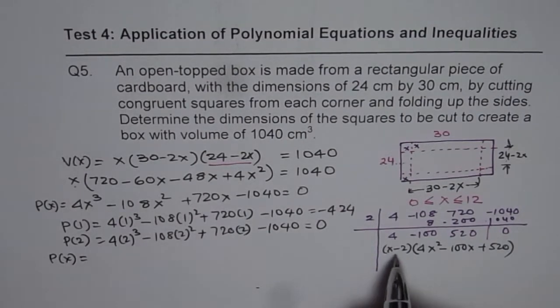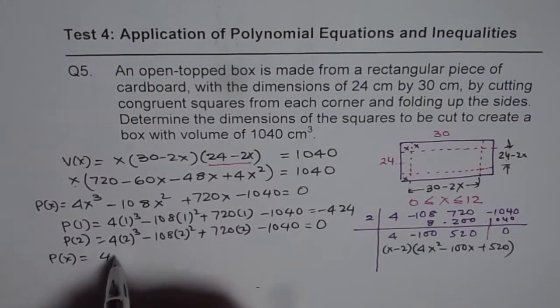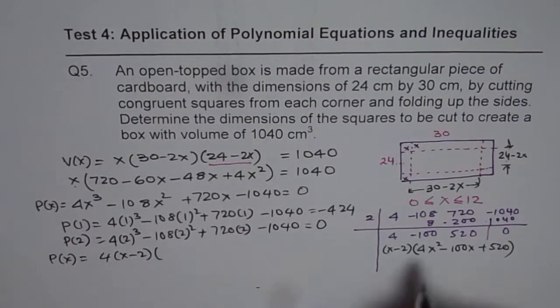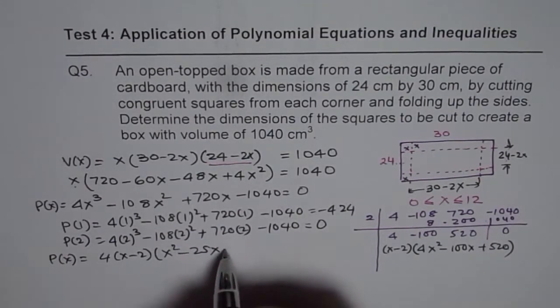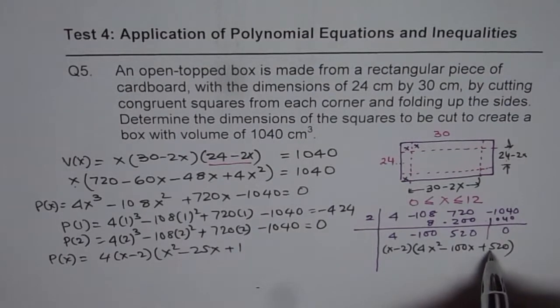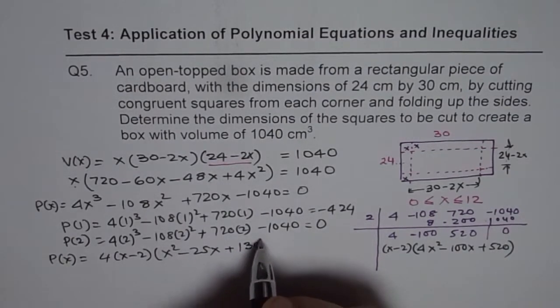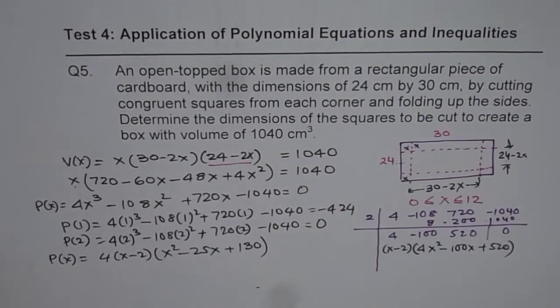We can take 4 common. So, let me write polynomial again here, which will be, I will take 4 also. So, 4x minus 2 times, if I divide by 4, I get x squared minus 25x and 4, 1 times and 12 is 130, right? So, that is the factor.